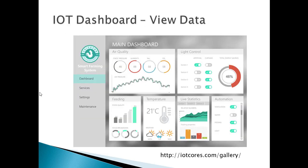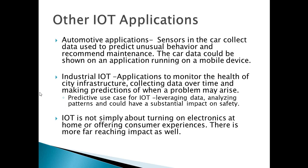The applications also include ones that collect and analyze data to make insights. This screen shows data collected for a farming application showing things like air quality and soil conditions, which in turn could automatically trigger irrigation changes. Other examples include automotive applications — for example, sensors in the car could collect data that an application could use to predict unusual behavior and then recommend maintenance. The car data could be shown on an application running on a mobile device.